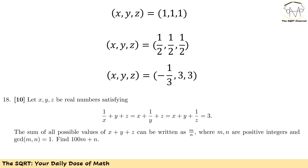If by changing the values of x, y, z we end up with the same value for x plus y plus z, then that case is already visited. Because of that we only have three distinct cases — swapping the values in the third case does not change x plus y plus z.